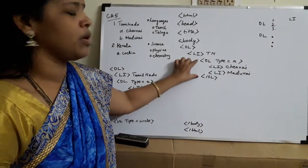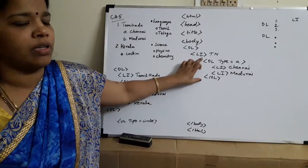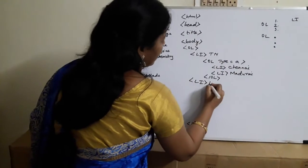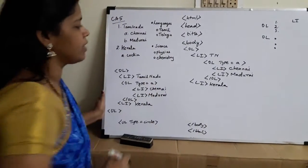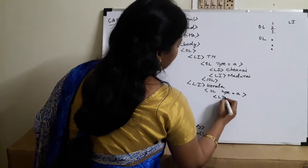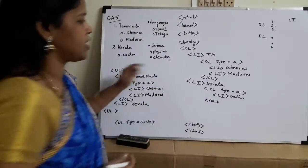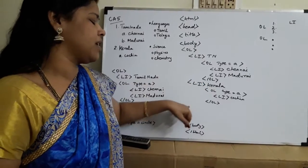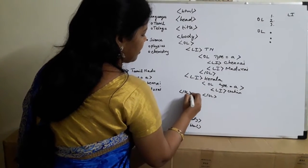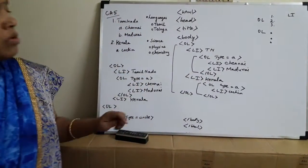After closing the inner OL with the closing tag slash OL, I move to the next item. This is like a nested ordered list. The second item in the outer ordered list is LI for Kerala. Just like Tamil Nadu, you write OL type=A for Kerala and list the places. The outer ordered list has Tamil Nadu as the first item, Kerala as the second, Karnataka as the third, and so on. Close the inner OL and then the outer OL.